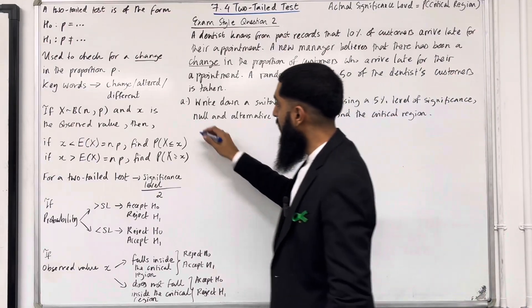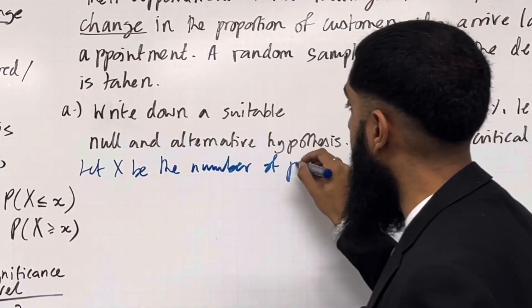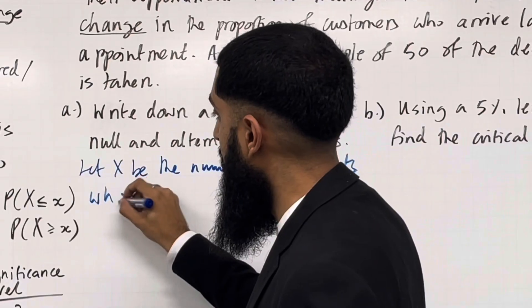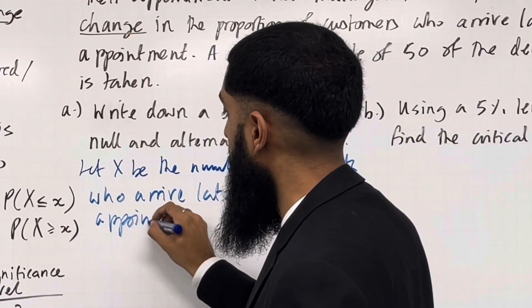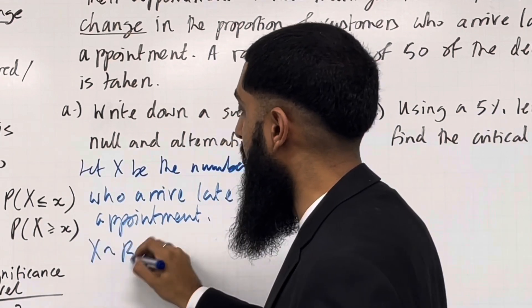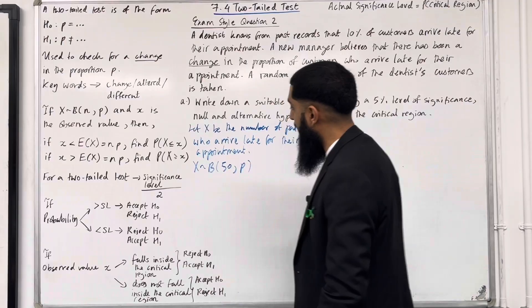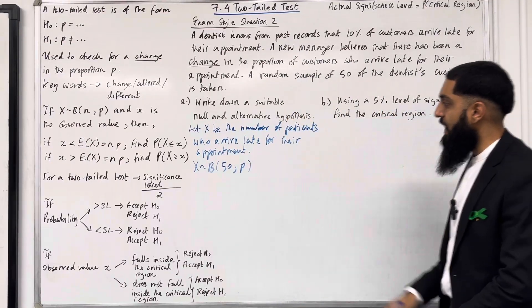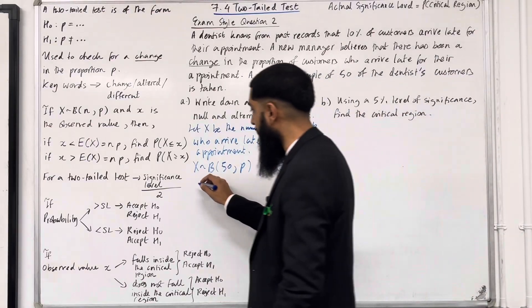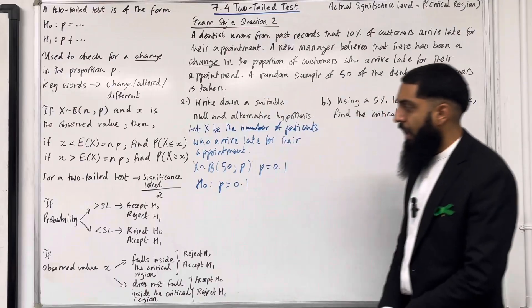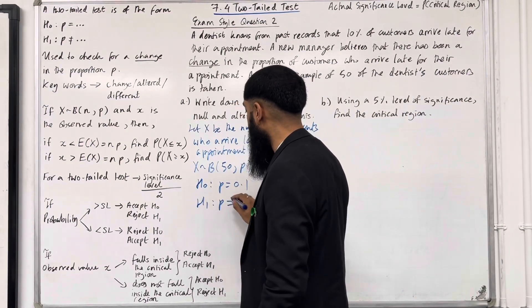Solution 2 Part A: let X be the number of patients who arrive late for their appointments. X takes on a binomial distribution with 50 trials, and fixed probability P assumed to be 10% = 0.1. The null hypothesis H0: P = 0.1. The alternative hypothesis H1: P ≠ 0.1, since we're testing if the proportion P has changed.